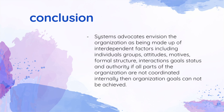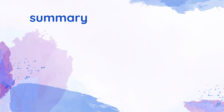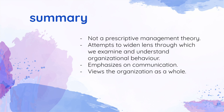To conclude, systems theory advocates envision the organization as being made up of interdependent factors, including individuals, groups, attitudes, motives, formal structure, interaction, goals, status, and authority. If all parts of the organization are not coordinated internally, then organizational goals cannot be achieved. To sum up, systems theory is not a prescriptive management theory — it attempts to widen the lens through which we examine and understand organizational behavior, emphasizes communication, and views the organization as a whole. Thank you everyone for listening.